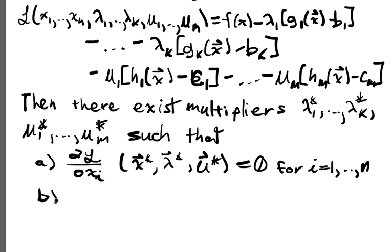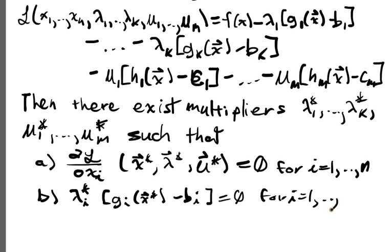B, we've got the complementary slackness conditions, that is lambda i star times Gi X star minus Bi is equal to zero for i equals 1 up to K.